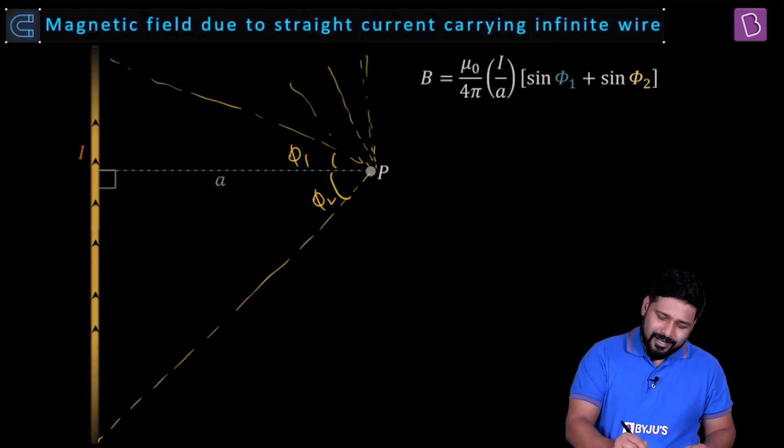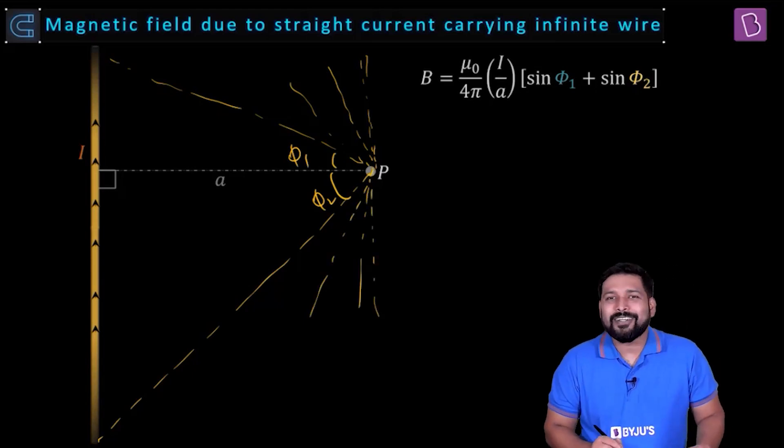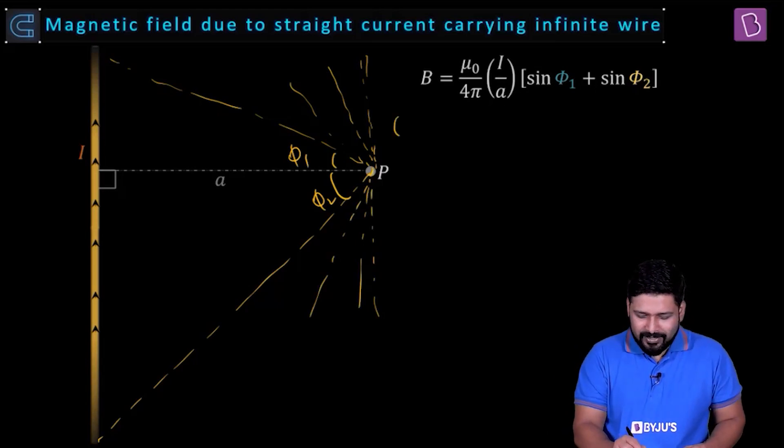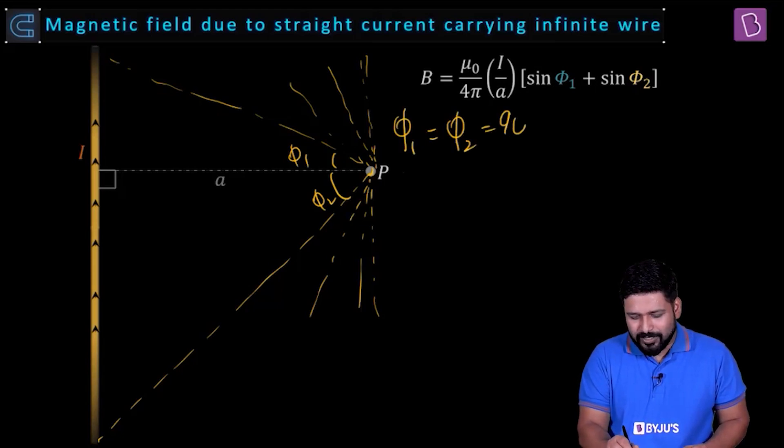On the other end also it is extending. So you see the value of phi 2 will go on increasing. Till when? Till it becomes equal to what? 90 degrees. Till the value of phi 1 and phi 2 becomes equal to how much? 90 degrees.